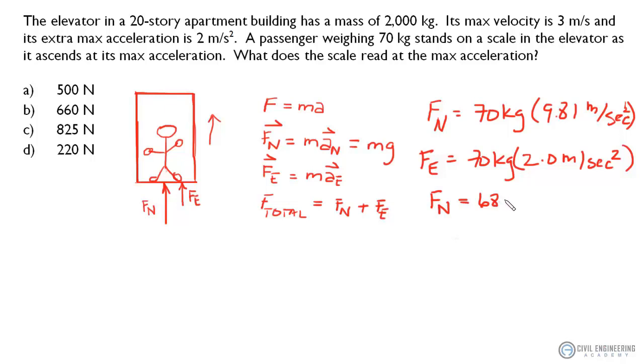And F_E is going to be about 140 Newtons. Keeping in mind, just so we're consistent with our units, a Newton equals a kilogram meter per second squared. Okay, we add those two quantities up because again we're adding those two vector quantities.